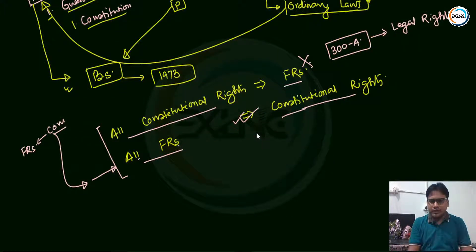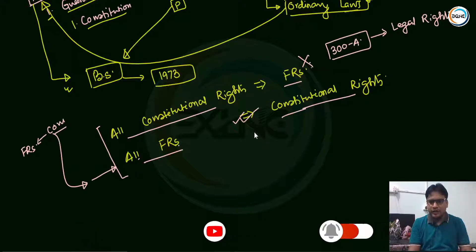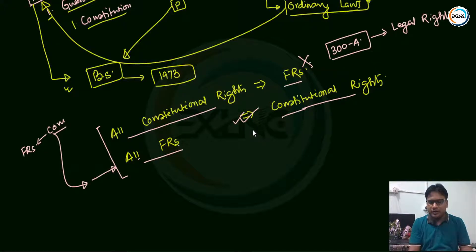So we are wrapping up today's class. Today was an introduction class and we have studied the basic definitions of fundamental rights. It is called the Magna Carta and it is enshrined in Part 3 of the constitution, Articles 12 to 35. We have studied basic terms like justiciable, non-justiciable, legal rights, and the difference between them. The Supreme Court is the guarantor and protector of fundamental rights. In the next lecture, the class will be around half an hour. The key to civil service exam preparation is persistence and determination. Revise your previous class. Stay safe, stay healthy — we meet again in the next class.